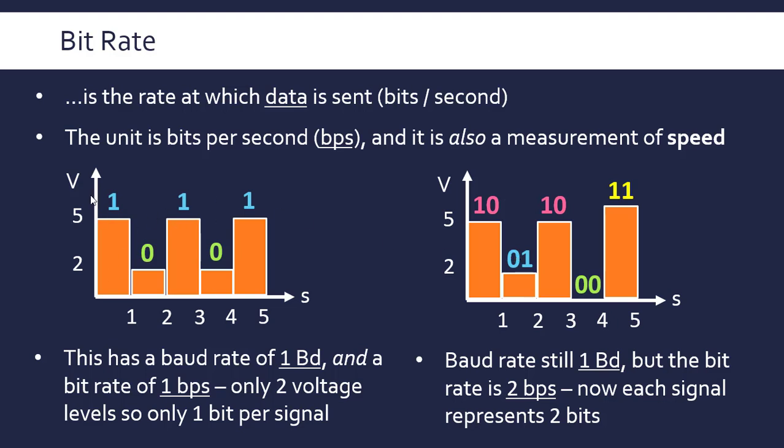Simple devices will basically have the same baud rate and bit rate, but more complicated and especially analog devices might have a higher bit rate than baud rate because they're assigning multiple bits to each signal to push more data through per second.